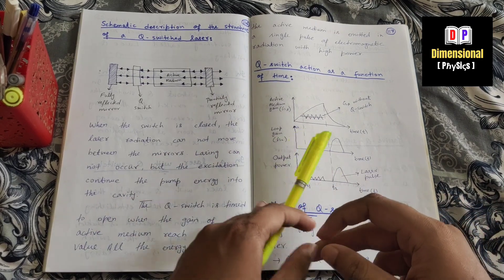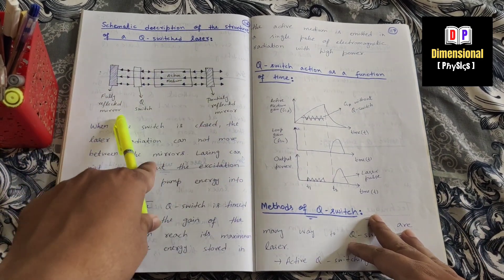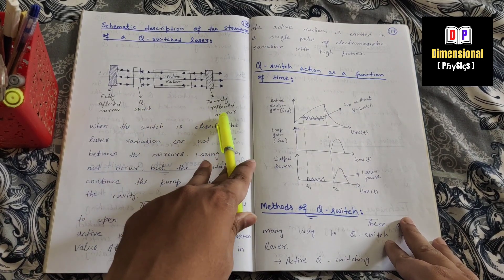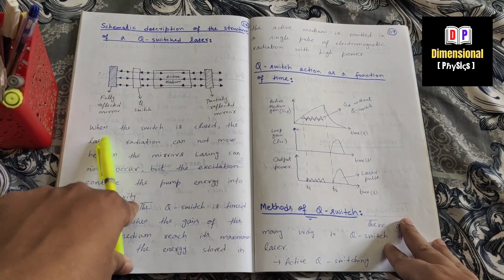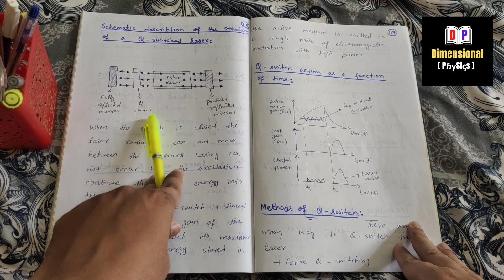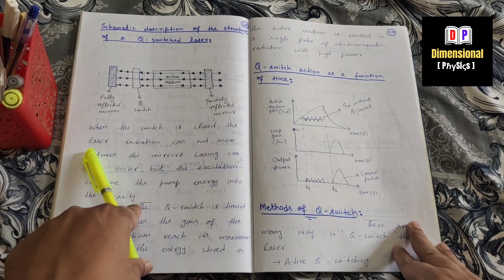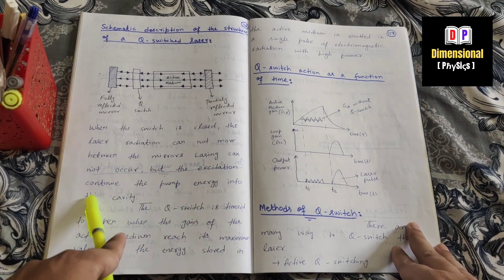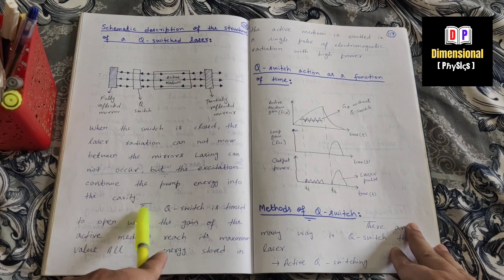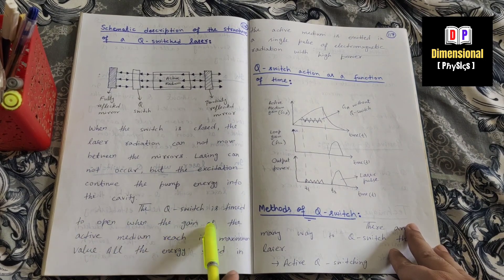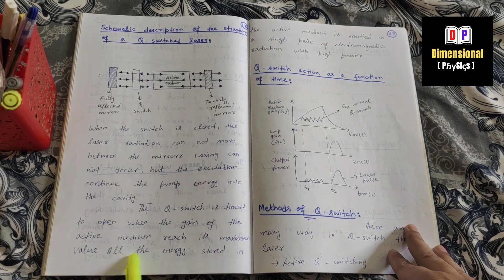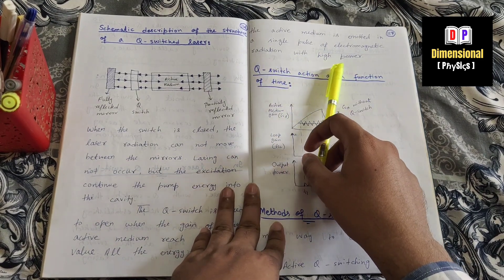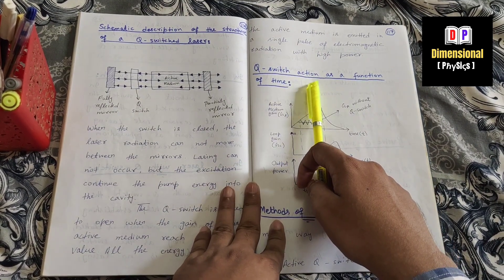Schematic description of the structure of a Q-switching laser: there is an active medium, a Q-switch, a partially reflective mirror, and a fully reflective mirror. When the switch is closed, the laser radiation cannot move between the mirrors and lasing cannot occur, but excitation continues to pump energy into the cavity. The Q-switch is timed to open when the gain of the active medium reaches its maximum value.